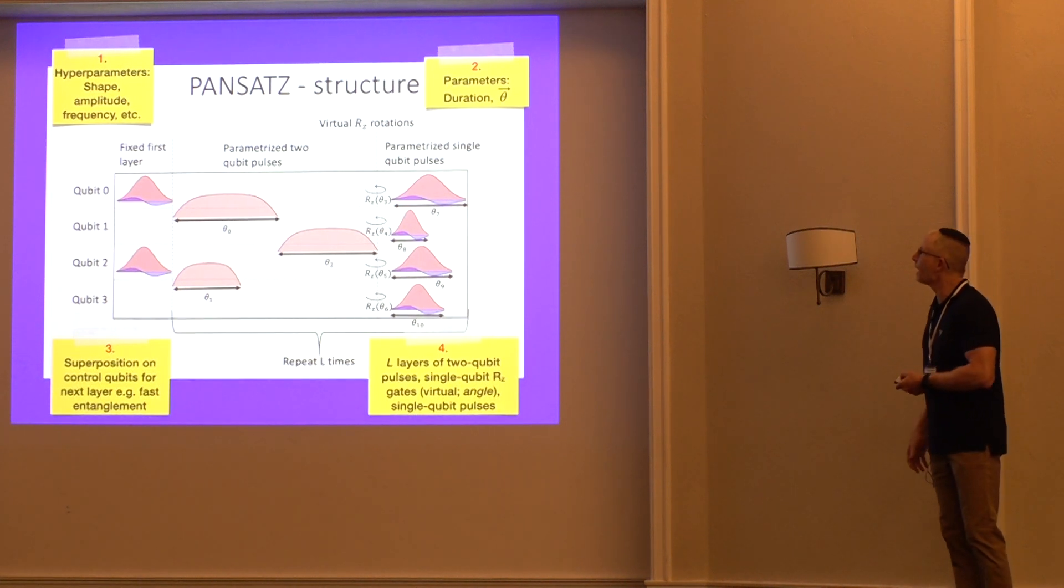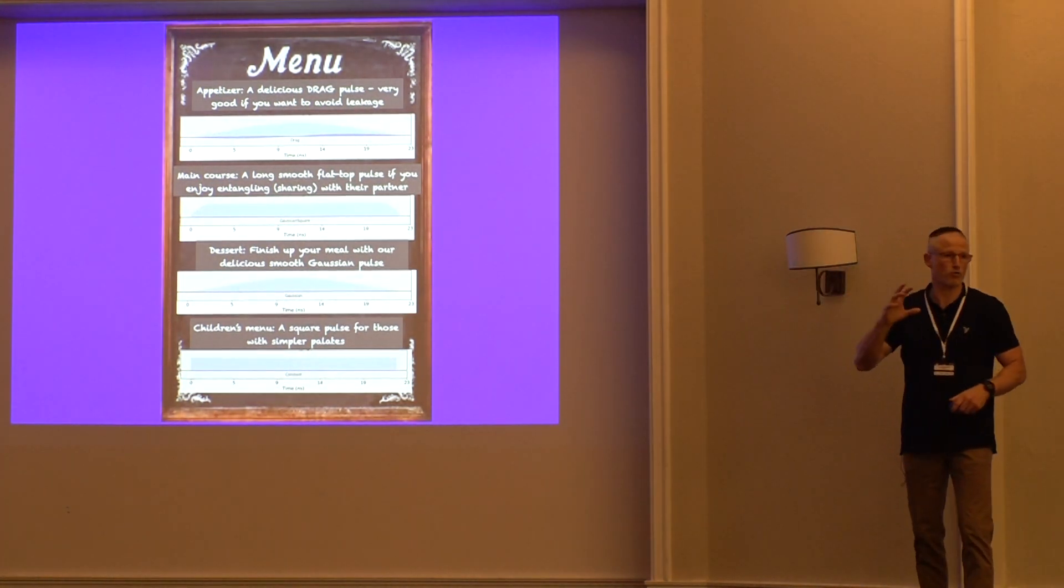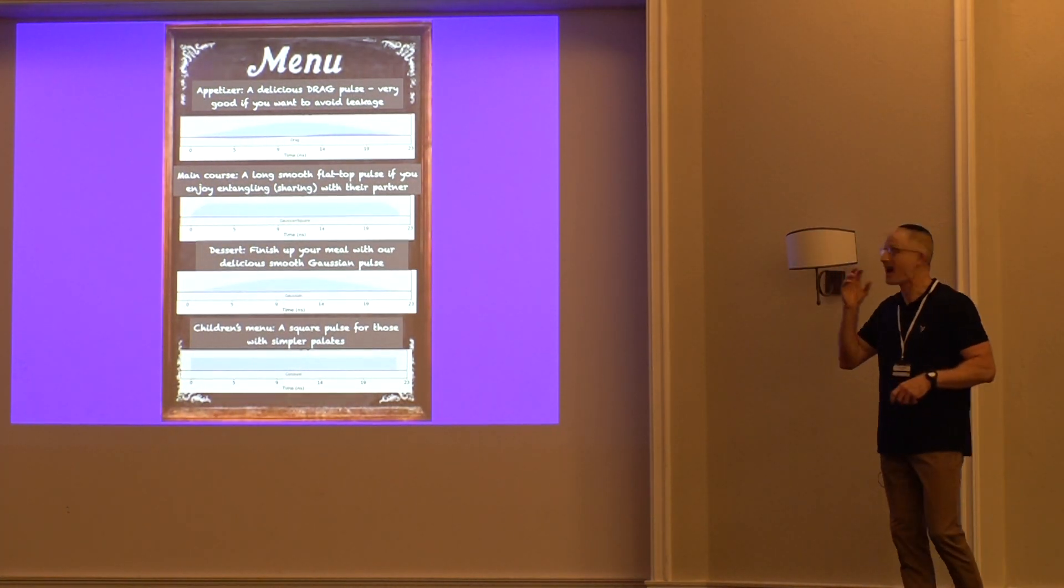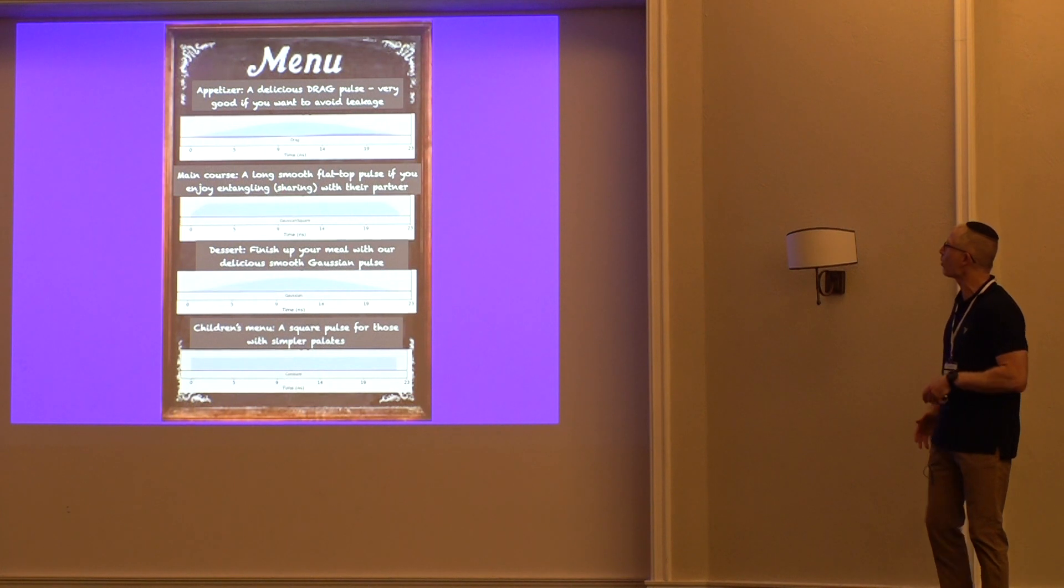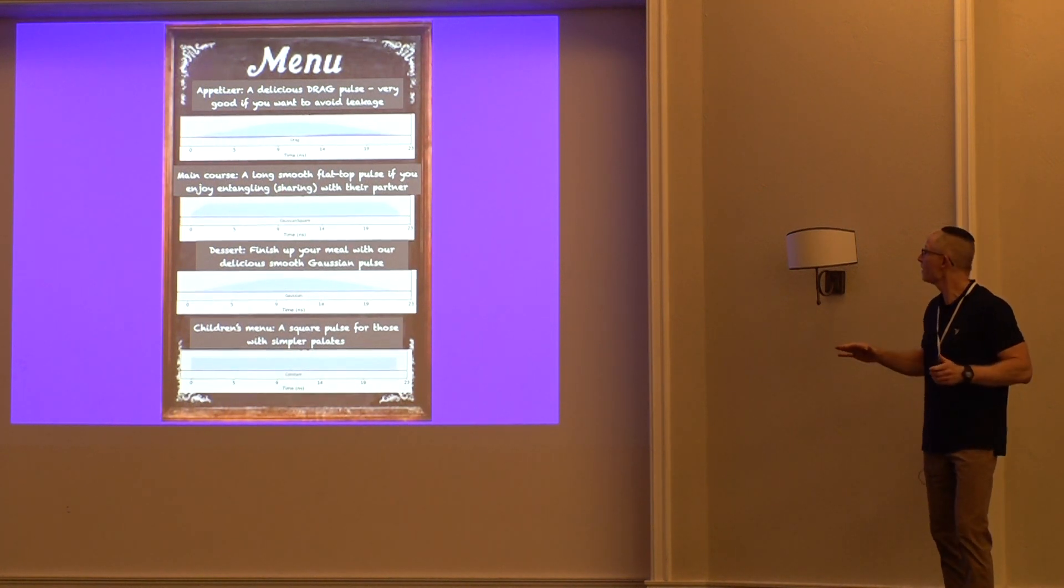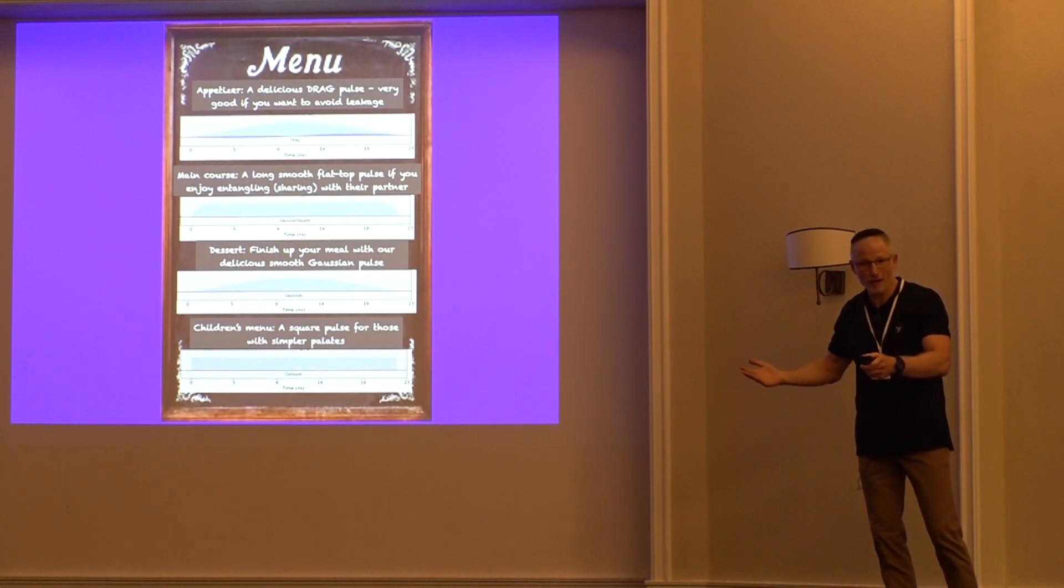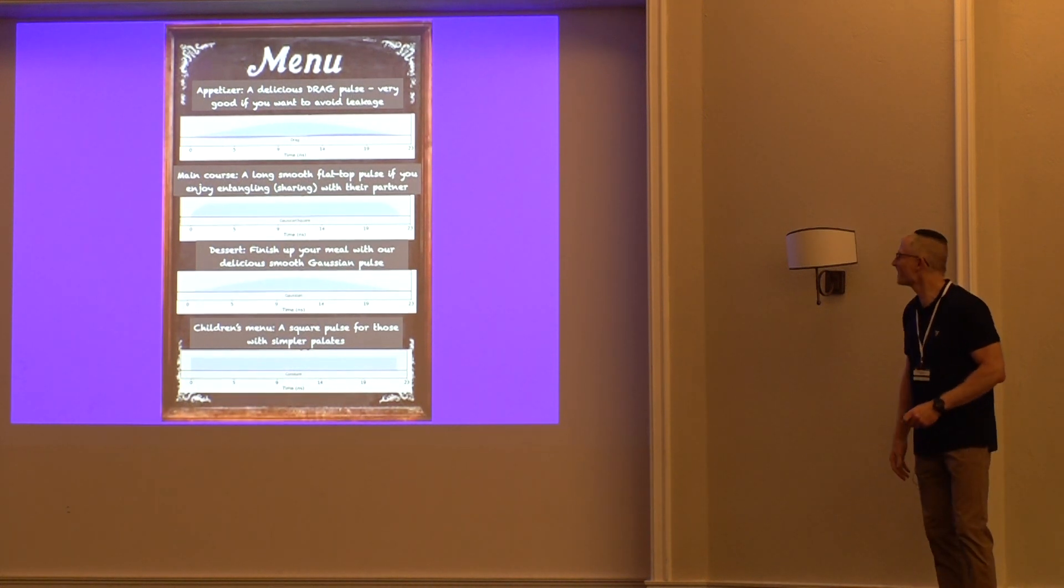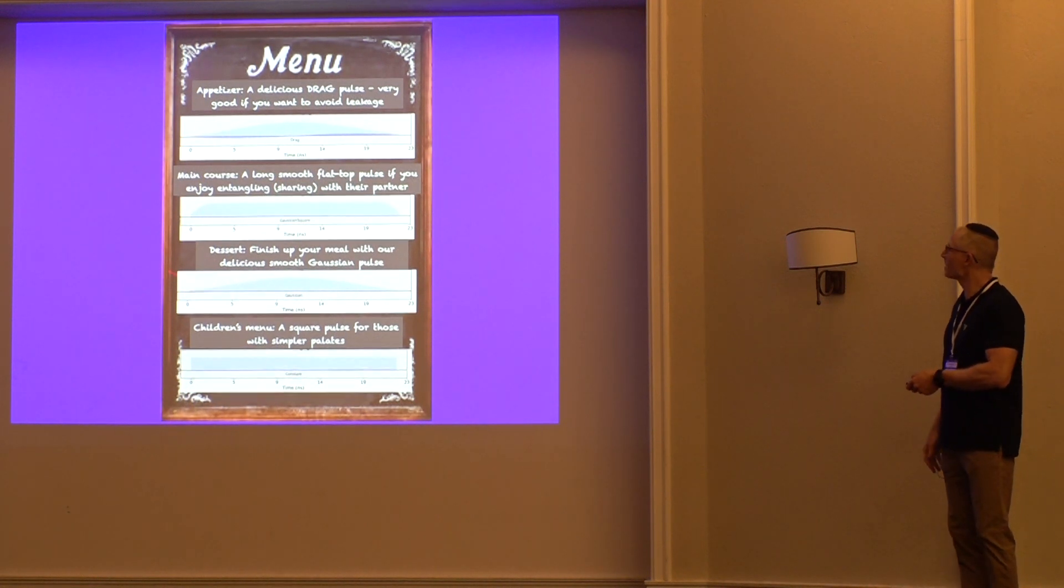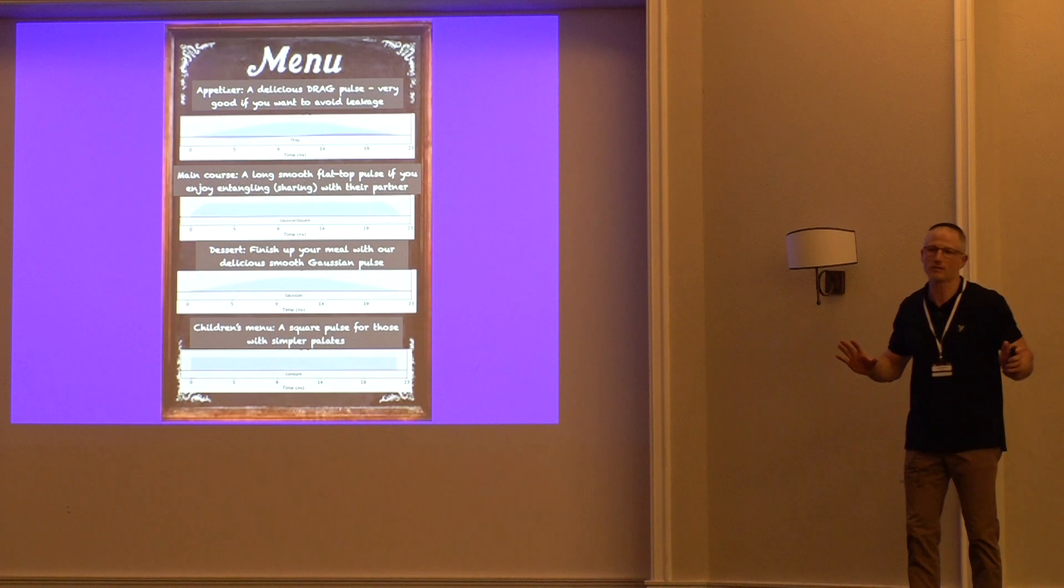With regard to the pulse shape, let me show you what the pulse menu looks like. For our appetizer today, we have a delicious DRAG pulse, and this is highly recommended, especially if you want to avoid leakage. And during the meal, that could be a problem. Then we move on to the main course, which is a long, smooth, flat-top pulse. This is really good if you enjoy entangling or sharing your food with your neighbor. And then we can finish up dessert with your delicious, smooth Gaussian pulse. Goes down very smoothly. And then we also have a children's menu with a square pulse for those with simpler palates.